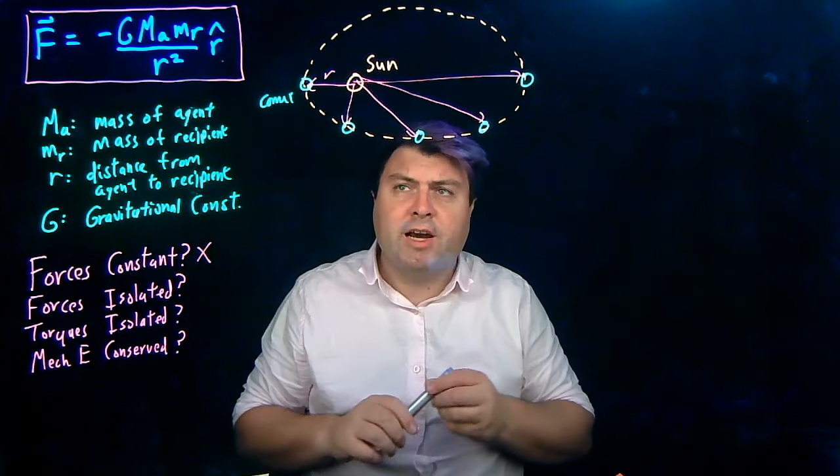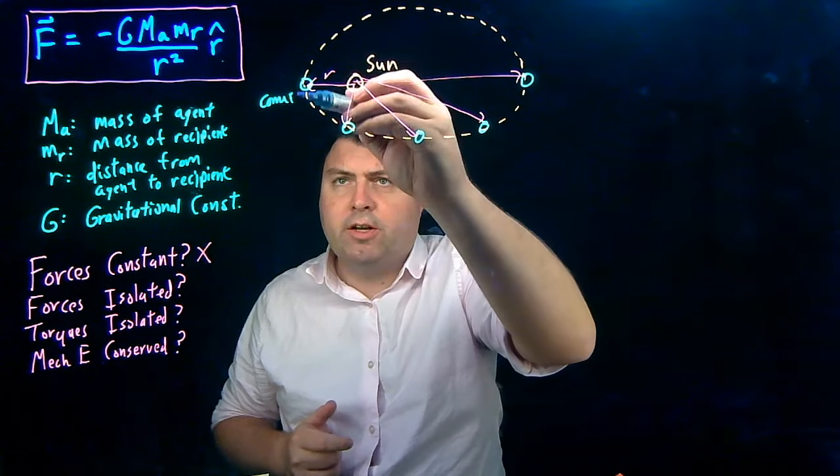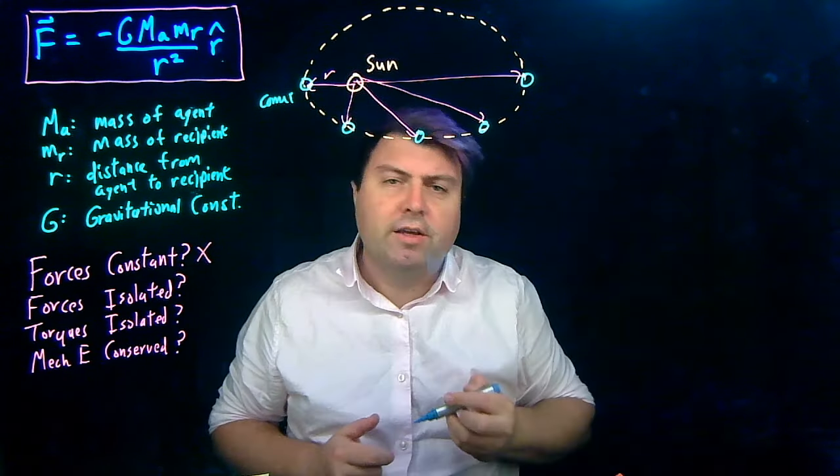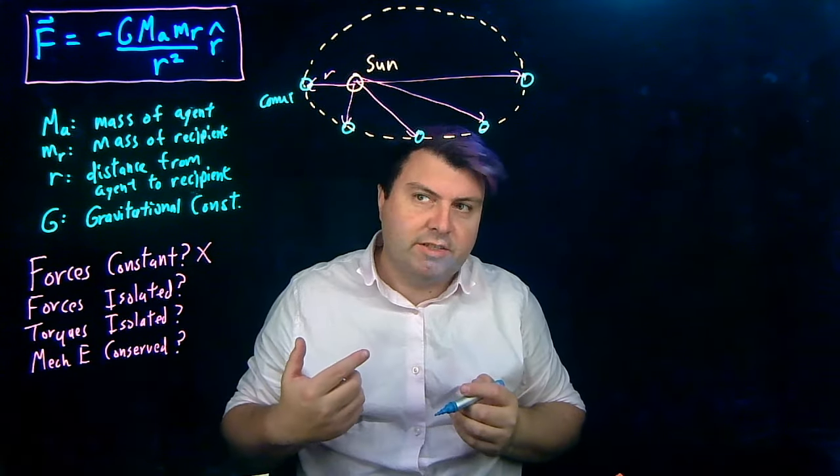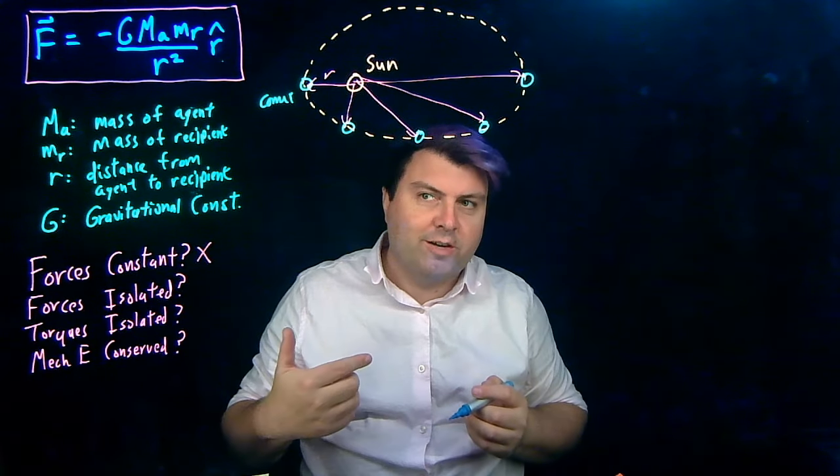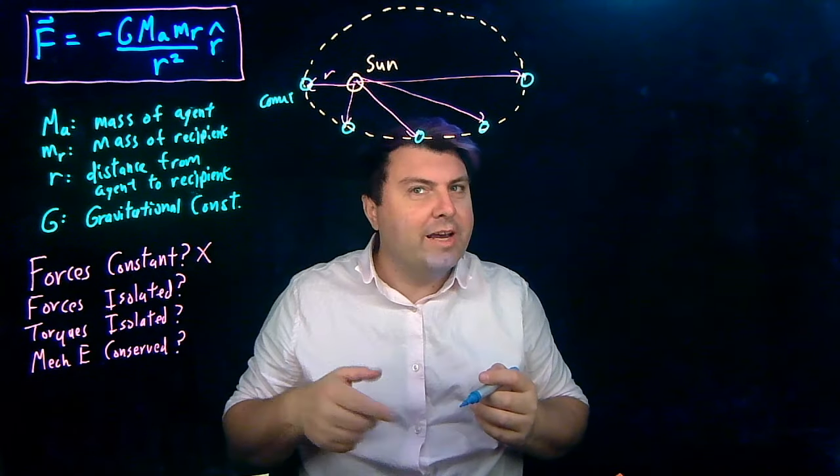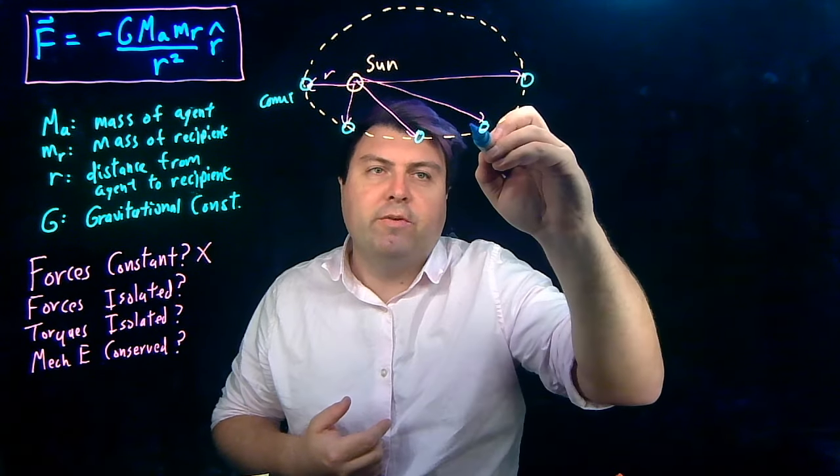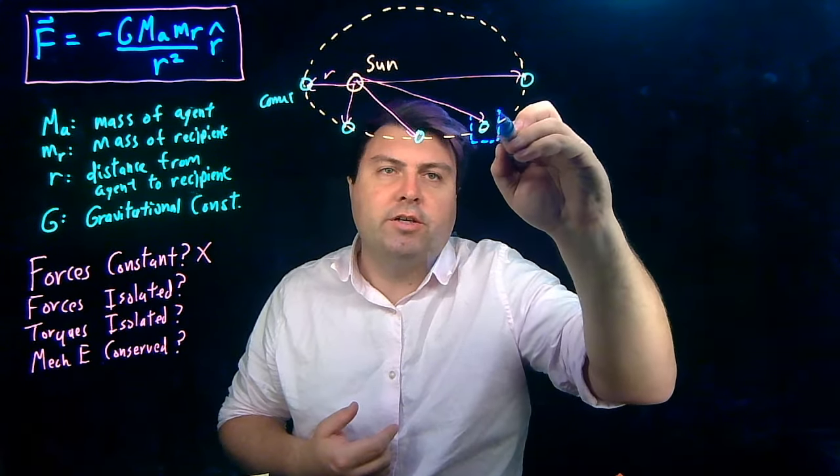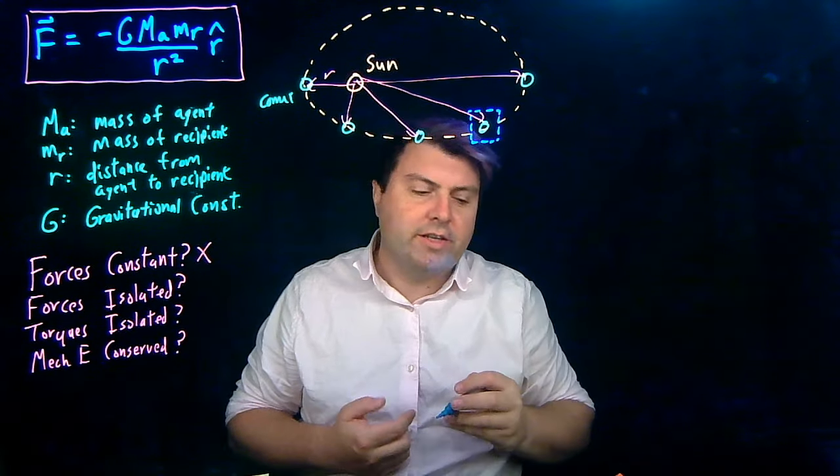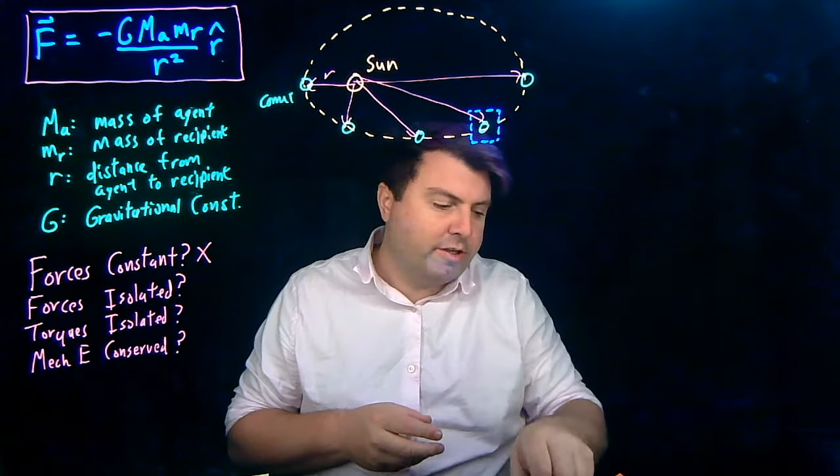Are the forces isolated? So we could draw a system in which both the sun and the comet were in the same system. It's usually done for a multivariable calculus class with physics involved in it. So we don't want to do that. We want to just consider just the comet itself.